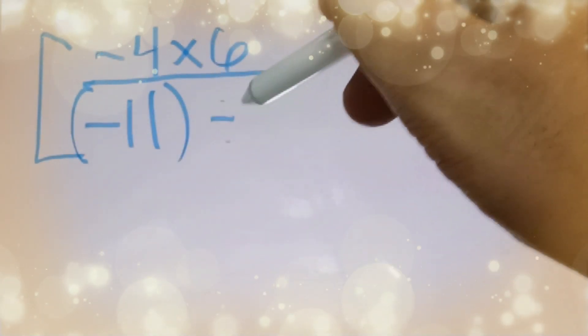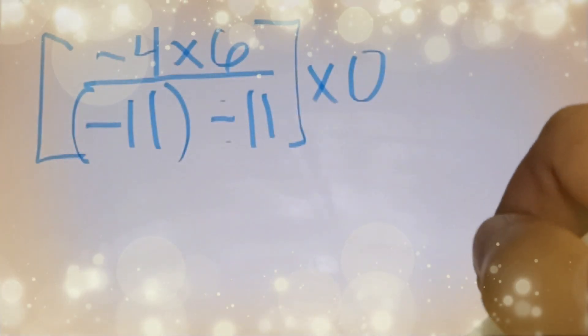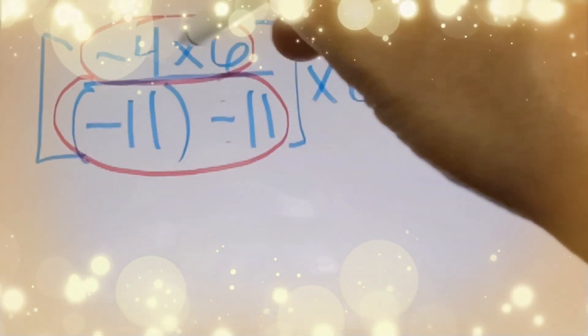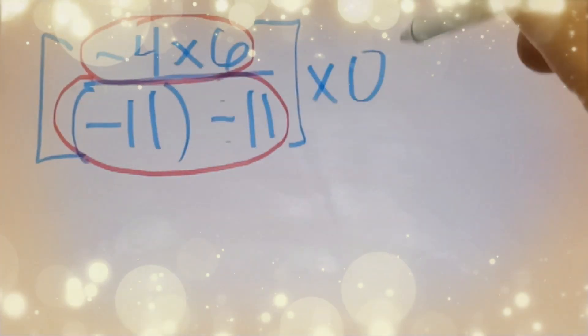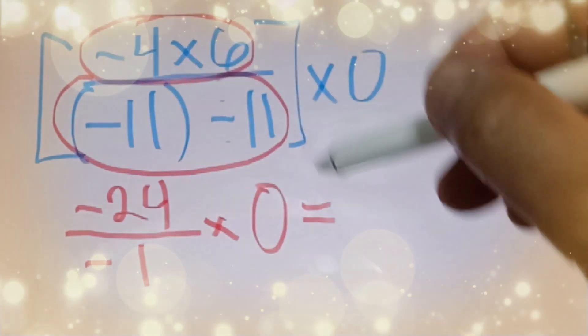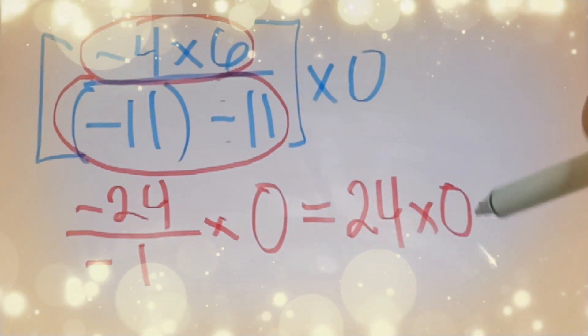For the second example: negative 4 times 6, divided by negative 11, divided by 11, times 0. We simplify step by step. Negative 4 times 6 is negative 24. Divided by negative 11 divided by 11 gives negative 1. Then negative 24 divided by negative 1 is positive 24. Multiply by 0, so the answer is 0.